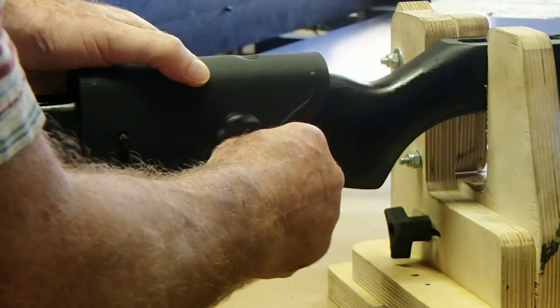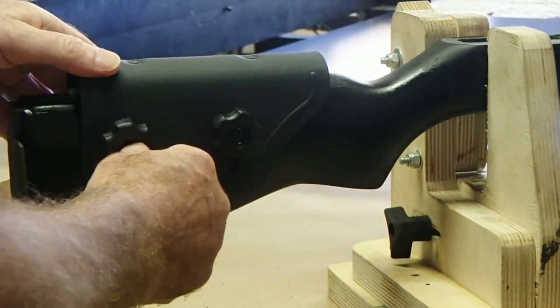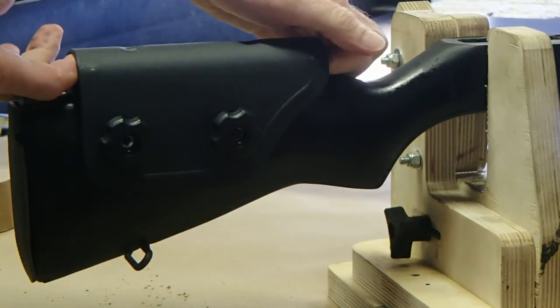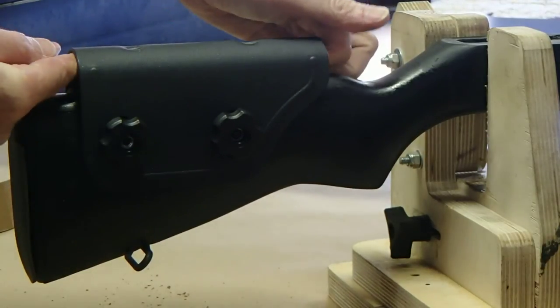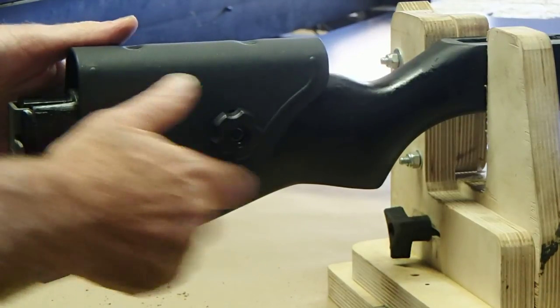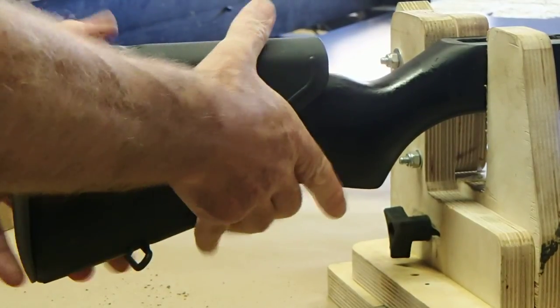Put the locking knobs onto the bolts. Adjust the cheek-rest to the correct height. That's usually a trial and error process. And lock the knobs. They're all done.